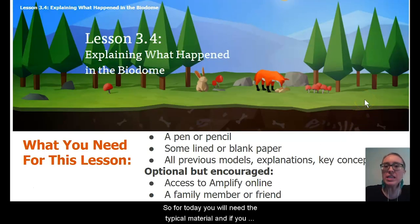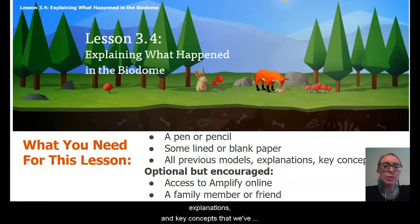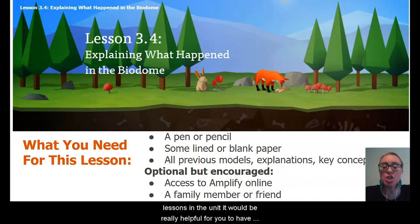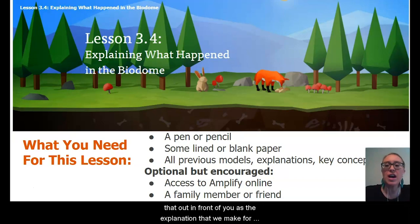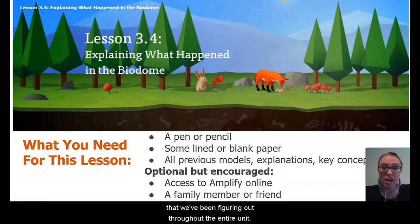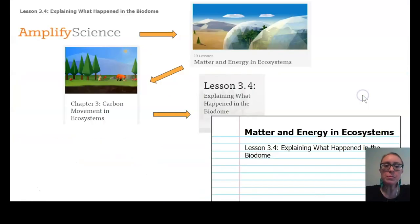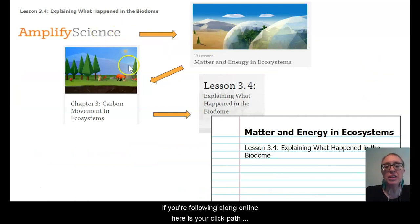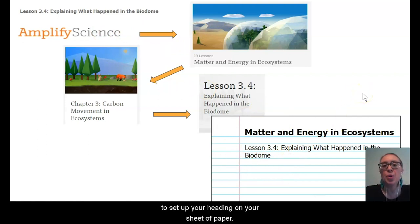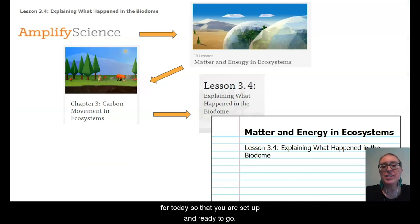For today, you will need the typical materials and if you have access to all of your previous models, explanations, and key concepts that we've recorded on all of our sheets of paper from all of our lessons in the unit, it would be really helpful to have that out in front of you. This explanation for our Econauts is going to combine everything we've been figuring out throughout the entire unit. Here is your click path and here is how I would like you to set up your heading on your sheet of paper. Pause the video and gather everything you need.